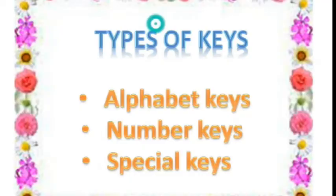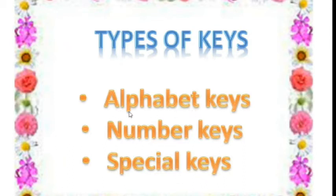Then we discussed about three types of keys on the keyboard. Which are they? Alphabet keys, number keys, and special keys. The spelling of alphabet is A-L-P-H-A-B-E-T. Number is N-U-M-B-E-R. And special is S-P-E-C-I-A-L.